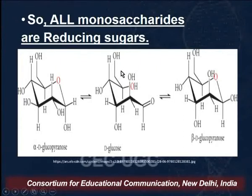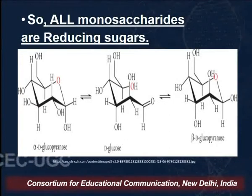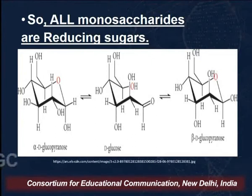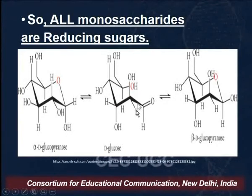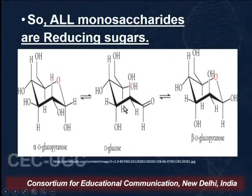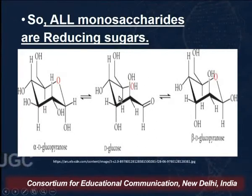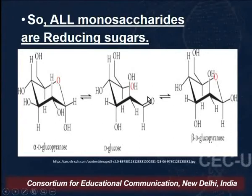Whether we talk of glucose, galactose, or mannose — which are epimers of glucose — all of them have an aldehydic group and all of them are reducing sugars. Whether we take alpha-D-glucose or beta-D-glucose dissolved in water, it undergoes ring opening and the aldehydic group is free. Although the open chain form is very little — less than 0.2% — it is nevertheless enough to act as a reducing agent and gives a positive test with Fehling's reagent, Tollens' reagent, or Benedict's reagent.